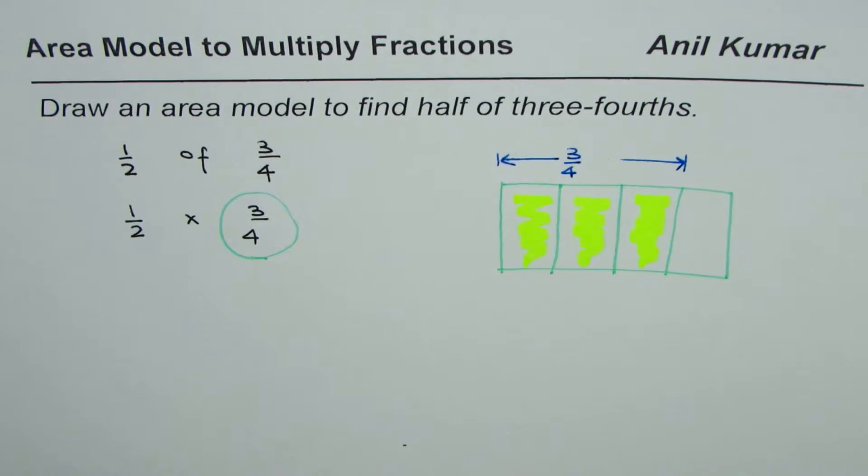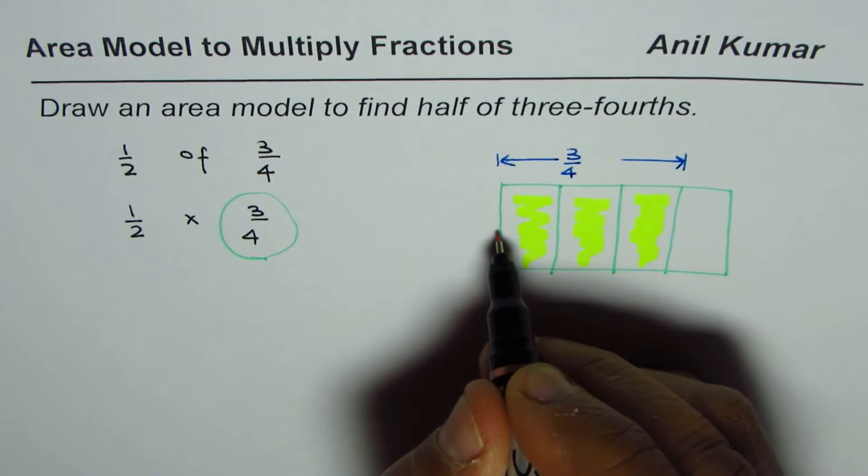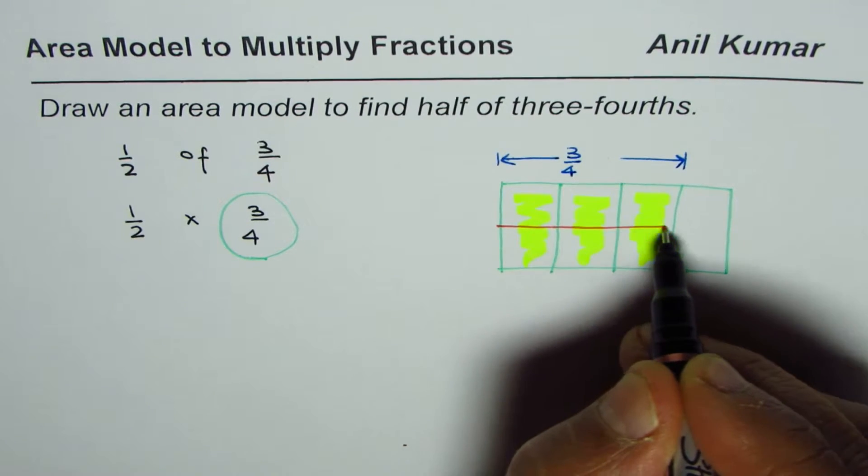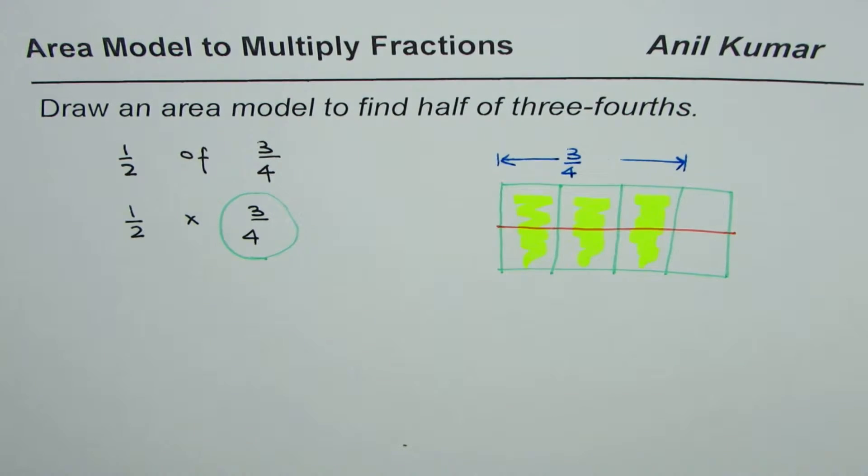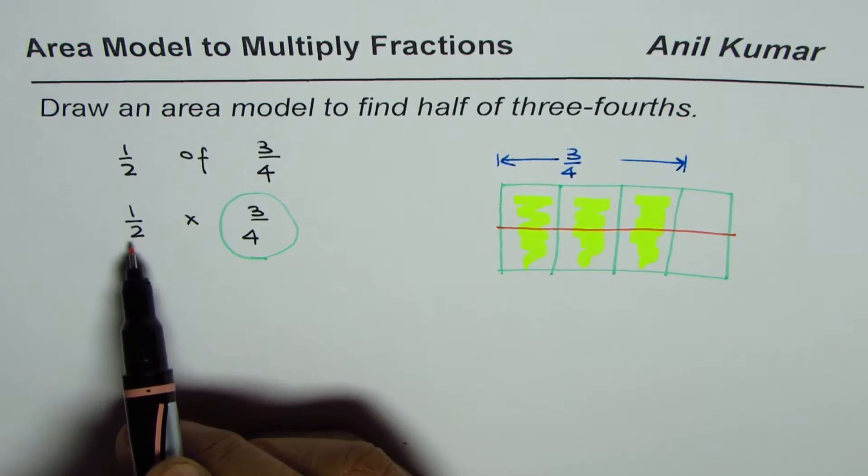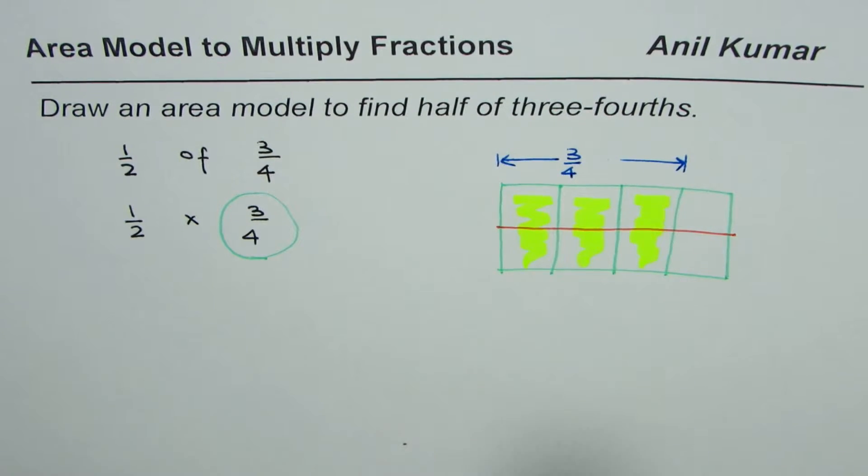Half of it really means that we can divide this into half like this, the whole thing into half. So once I do it into half and select just one. We select just one of it.